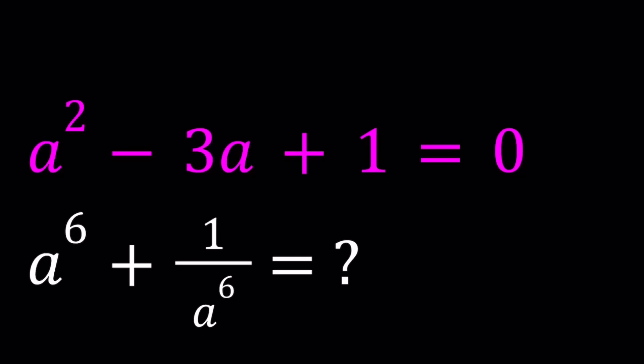Hello everyone. In this video, we're going to be dealing with a polynomial. We have a squared minus 3a plus 1 equals 0, and we're supposed to evaluate the expression a to the 6th power plus 1 over a to the 6th power. I'll be presenting three methods, and let's start with the first one.